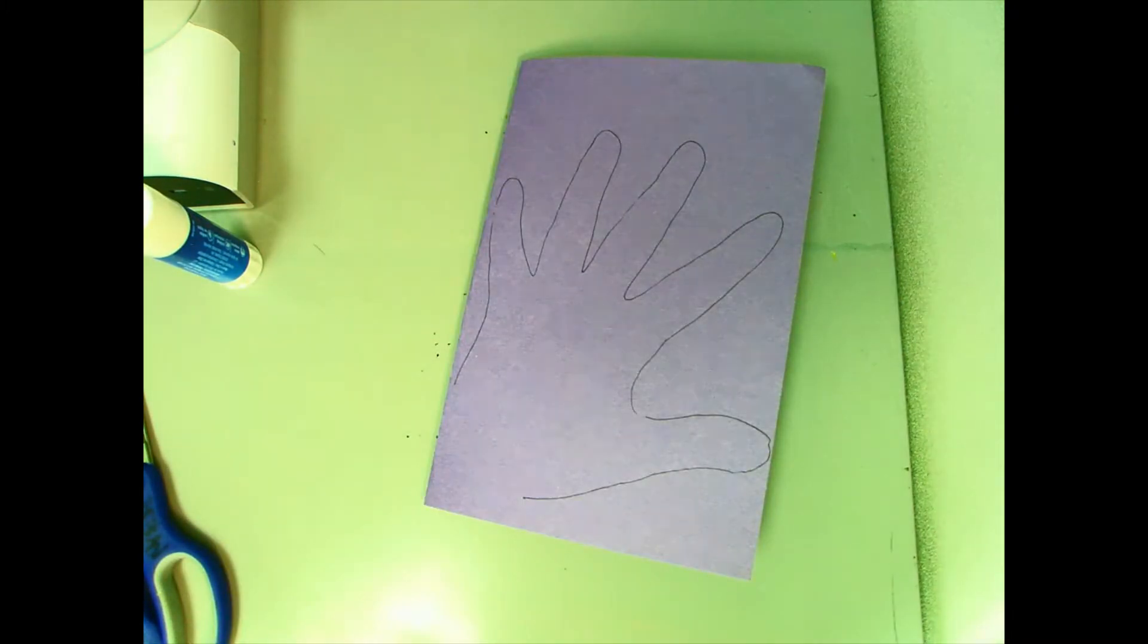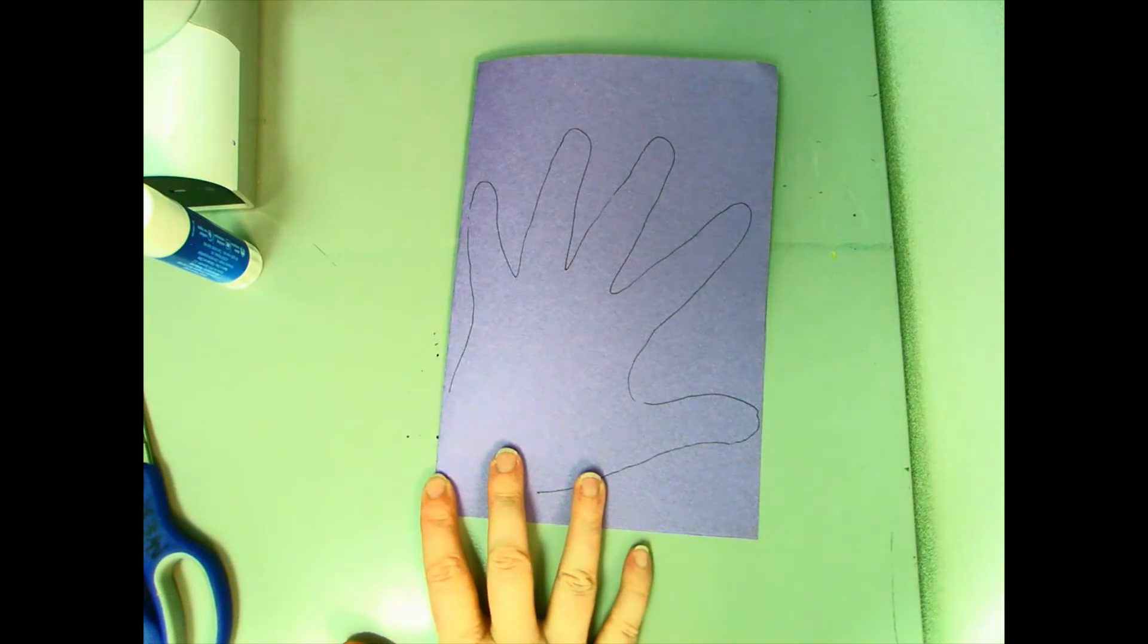Now that I have my outline I'm going to cut it out. Because it's folded in half I'm going to get two shapes the same. Once I do that I'll show you how to put it together.